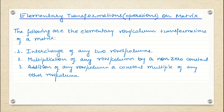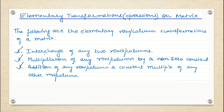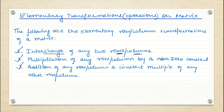There are different methods under these transformations. Elementary transformation on a matrix involves three things. The first is the interchange of any two rows or interchange of any two columns. At once, either we perform the elementary row operation or the elementary column operation — both simultaneously we cannot do.